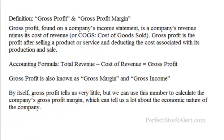Today we're going to be looking at the gross profit and the gross profit margin. I'm going to give you the definition and then go over some examples. Gross profit, found on a company's income statement, is a company's revenue minus its cost of revenue, or COG — the cost of goods sold. It's the profit after selling a product or service and deducting the costs associated with its production and sale. The accounting formula is: total revenue minus cost of revenue equals gross profit.